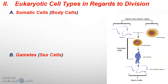Hello class, welcome back to our second lecture video on unit 6. In this lecture video, we're going to go over some key vocab terms that are going to help us better understand certain types of questions as we move on to more advanced topics in this unit, such as actually looking at the process of mitosis in each of its individual steps. We're going to focus on eukaryotic cell types in regards to overall cell division.